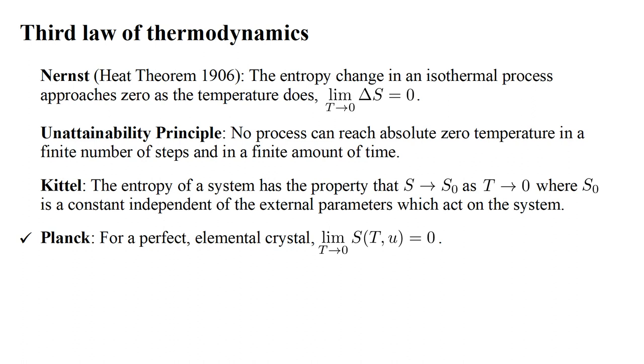In the early nineteen-hundreds, Nernst, Einstein, and others vigorously argued the foundations of what we now call the third law. Einstein questioned if the concept of an isothermal process at absolute zero is possible even in principle. He agreed that the heat theorem implies the unattainability principle. But he denied the converse that the unattainability principle implies the heat theorem. Einstein also argued that the entropy at absolute zero could not, in general, be a constant independent of any external parameters.